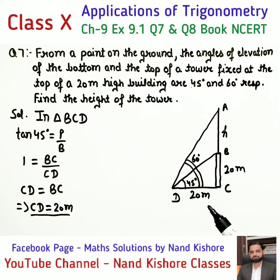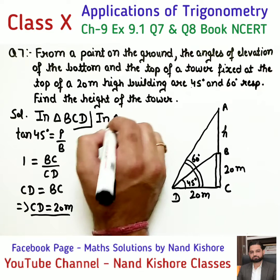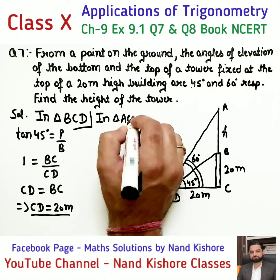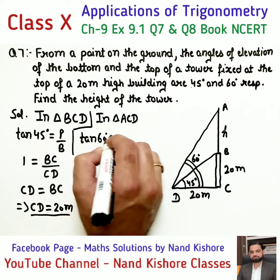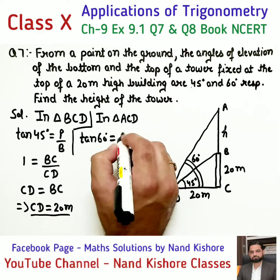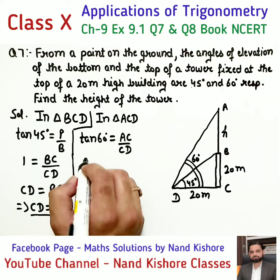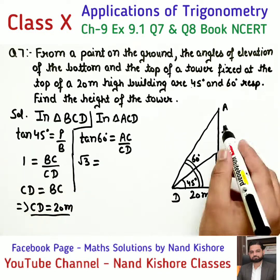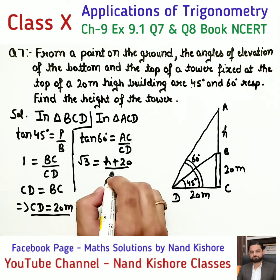Now let's go to the second larger triangle ACD. In triangle ACD, the angle is 60 degrees, so we apply tangent 60. Perpendicular is the full AC, and base is CD. Tangent 60 equals root 3. AC equals H plus 20, and CD equals 20.